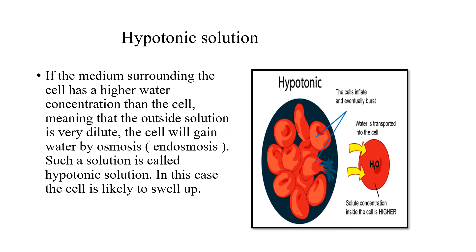The medium surrounding the cell has higher water concentration than the cell, meaning the outside solution is very dilute, so the cell will gain water by osmosis — that is endosmosis. You can even put raisins in water and after some time, you can see the shape has become swollen due to endosmosis.